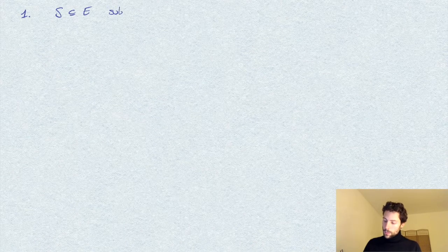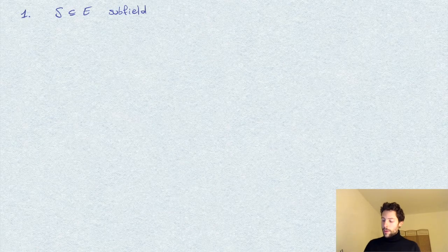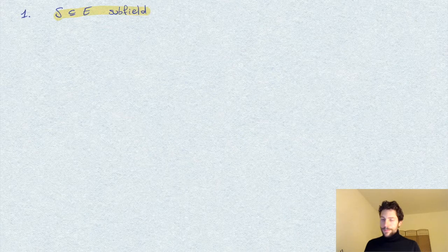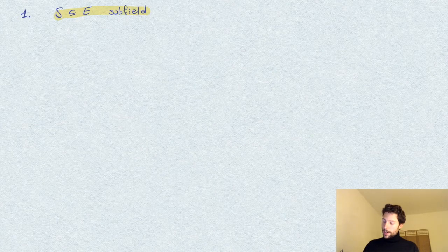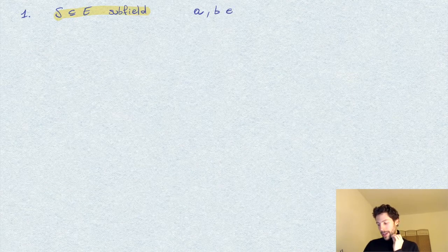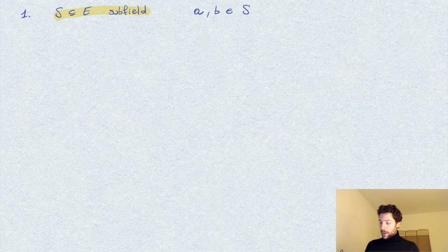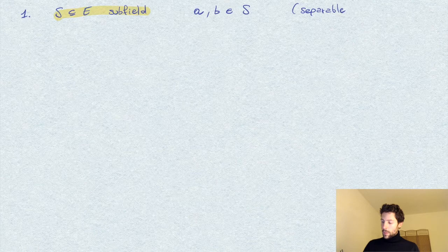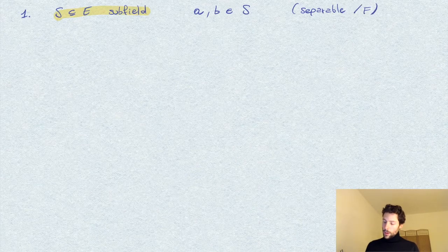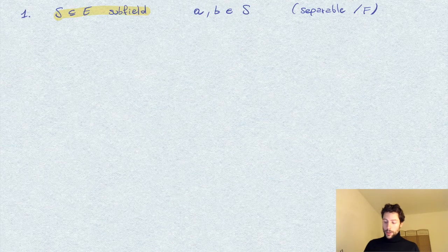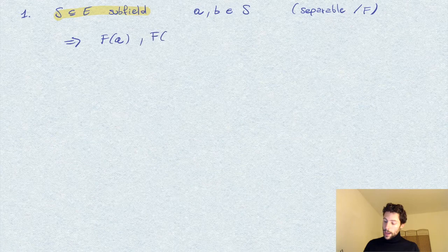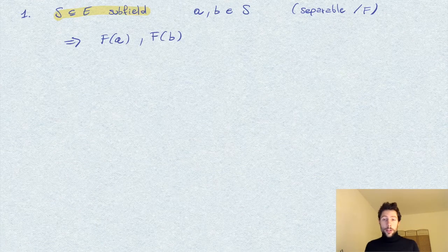So let's do this step by step. The first thing we notice is that S is indeed a subfield of E. Well, this is clear. Here, we take two elements in S. So it's clear if you realize that, at least by definition of S, these are separable over F.